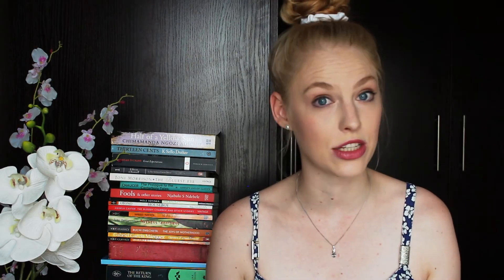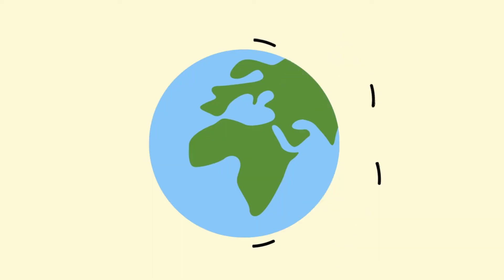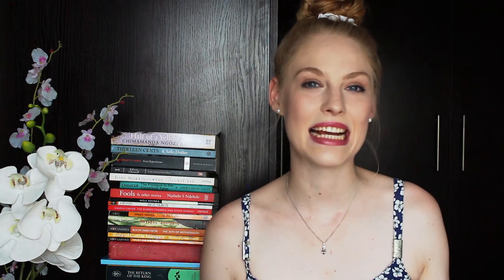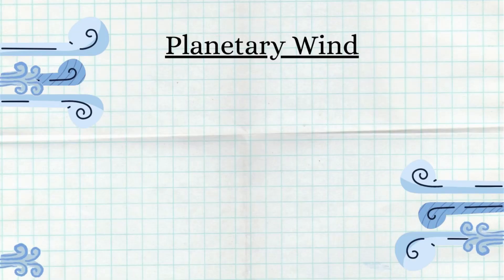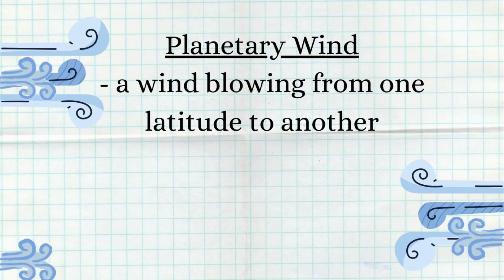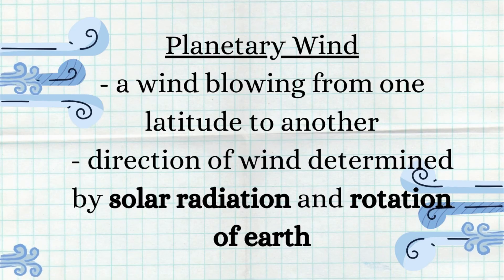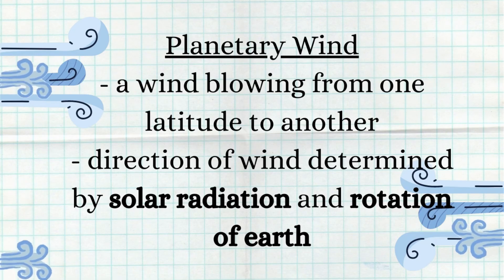A similar concept happens with winds. Winds from warmer latitudes transfer heat to colder latitudes and vice versa. This is essentially where planetary winds come from, which is another important term to remember. A planetary wind is a wind blowing from one latitude to another, and its direction is determined by solar radiation as well as the rotation of the Earth.